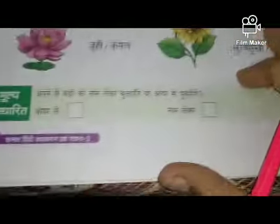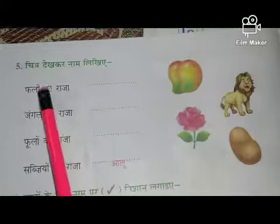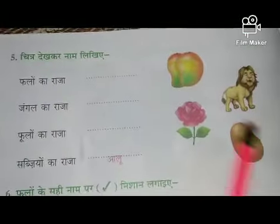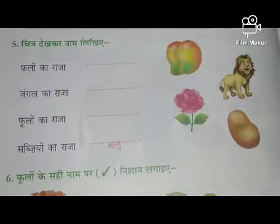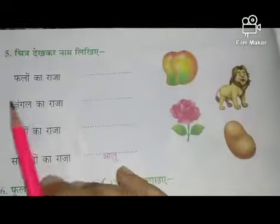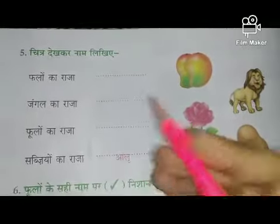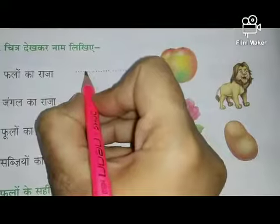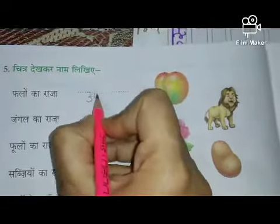Done. Now class, come to next page, page number 22. Read question number 5 — chitra dekhkar naam likhiye. Yaha pe bhi chitra banaya hai, unke naam aapko yahan likhne hai, okay. Phal ka raja kone hota hai? Very good — arm. So write down: arm.